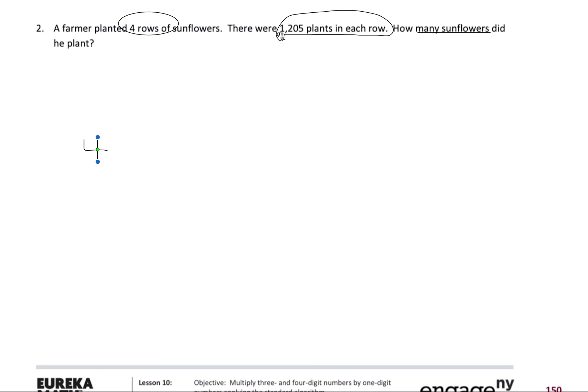Now as we said earlier, we're going to be using expanded form. So I'm going to have 1,000 plus 200 plus 0 plus 5.